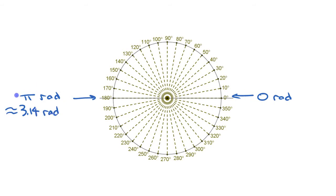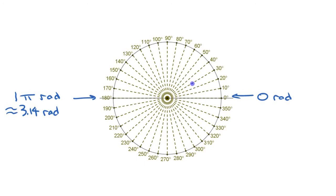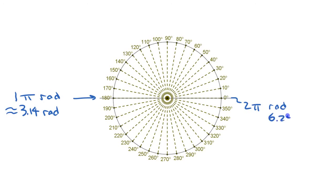If halfway around is one times pi, then all the way around is two times pi. One full turn is two pi radians — we can say it's two pi radians, or roughly 6.28 radians. You can write it as an exact value in terms of pi, or as an approximate decimal.